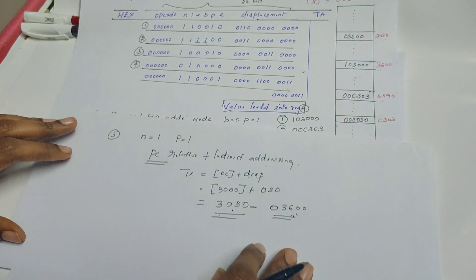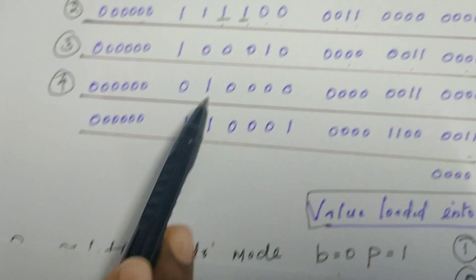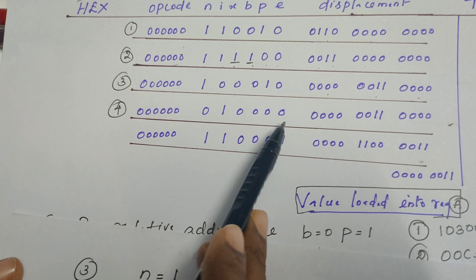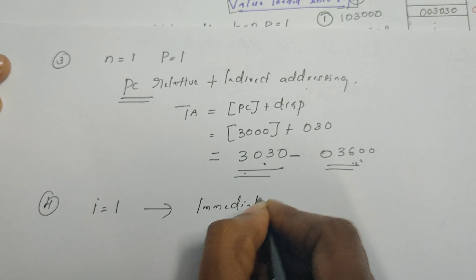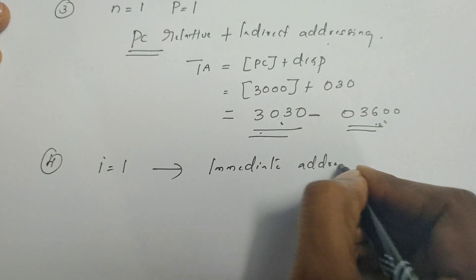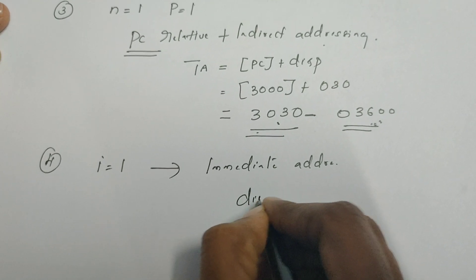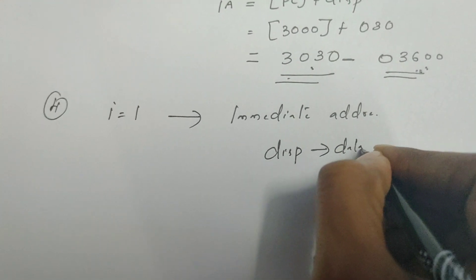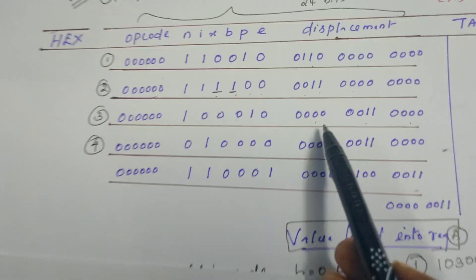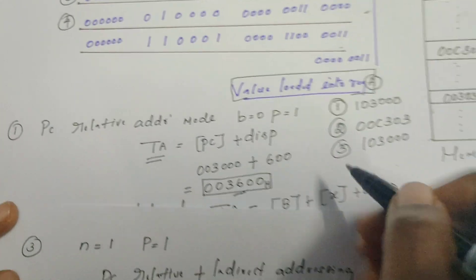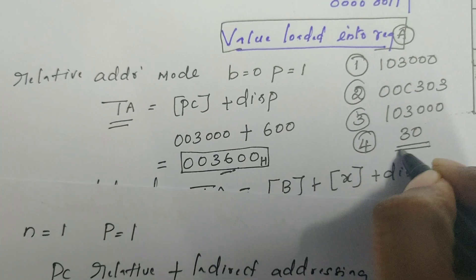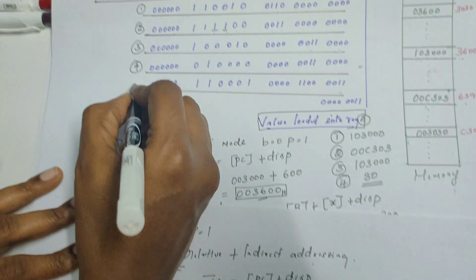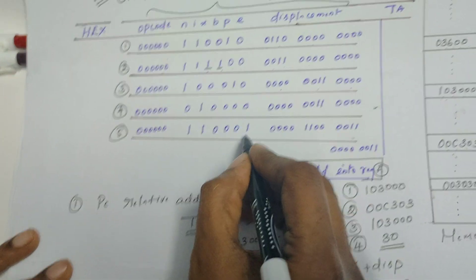In the fourth instruction, i alone is set to 1 and all remaining bits are 0. When i=1 it refers to immediate addressing mode, which means the data itself is part of the instruction — the displacement field is the operand. The displacement field contains 0x030, so the accumulator is loaded with the value 0x30 for the fourth instruction.